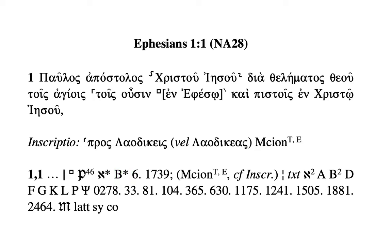Then you get two minuscules, 6 and 1739. What's left here is a reference to Marcion, the 2nd-century heretic, who is a witness to the omission of 'en Ephesō.' But we don't have his works directly — we have them mediated through Tertullian and Epiphanius, and that's what the T and the E stand for. You can find on page 81 of the introduction that it specifies we have a witness to Marcion through Tertullian and Epiphanius.